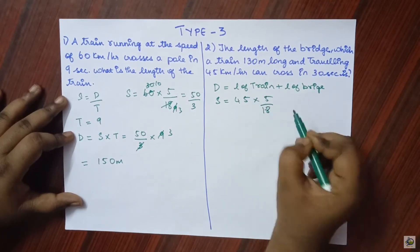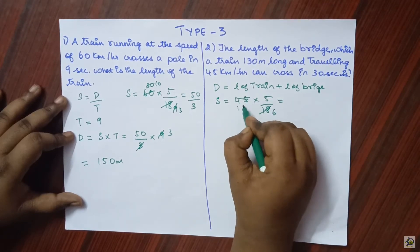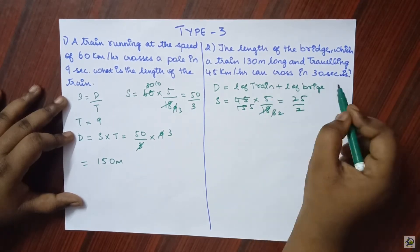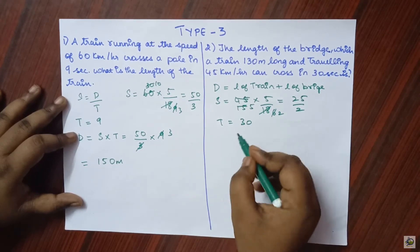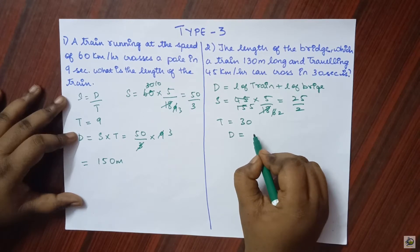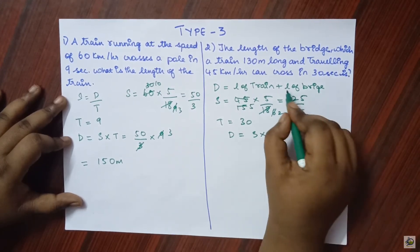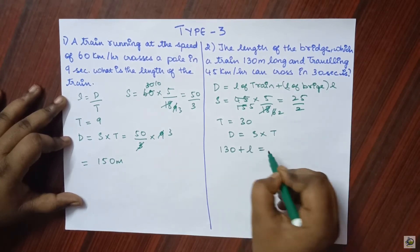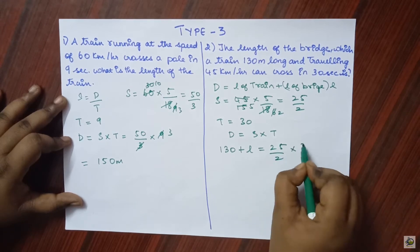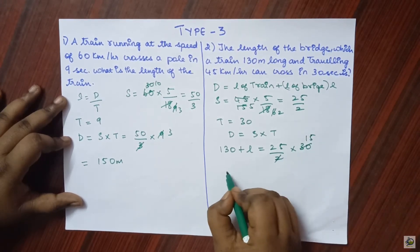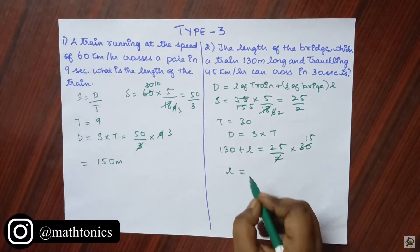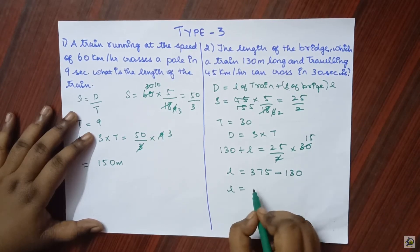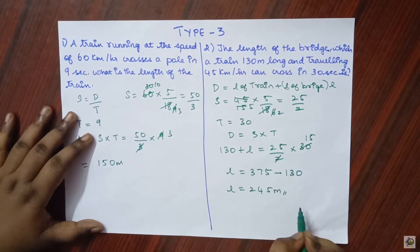The speed is 45 kilometers per hour, so we convert to meters per second by multiplying by 5/18. After cancellation we get 25/2 meters per second. Time is 30 seconds. Using distance equals speed into time, and letting L be the length of the bridge: 130 plus L equals 25/2 into 30. Cancelling gives 375. So L equals 375 minus 130, which is 245 meters. The length of the bridge is 245 meters.